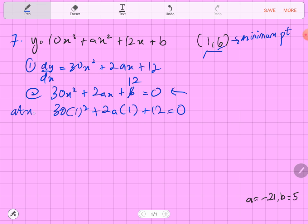This is at x equal to 1. What do we get here? It's 30 plus 2a plus 12 equal to 0. So 2a is equal to negative 42. a directly we get equal to negative 21.